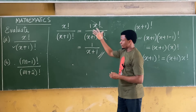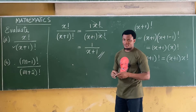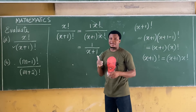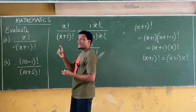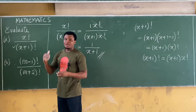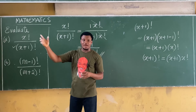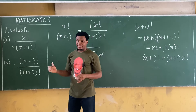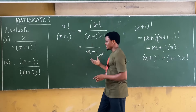That's how we solve these kinds of questions. The key idea is to express the bigger factorial in terms of the smaller factorial so they cancel out, and then simplify.